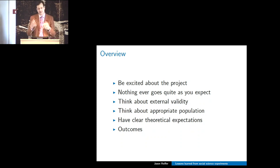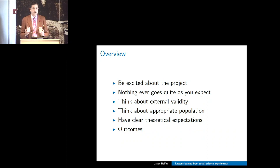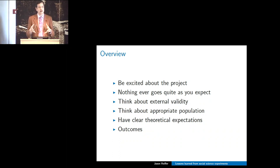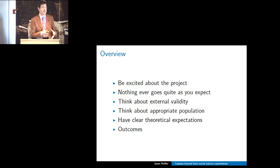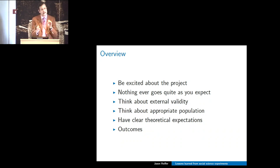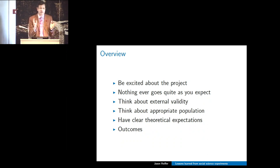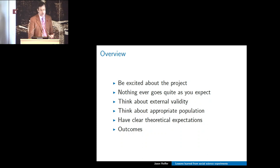You want to think about the appropriate population. When you're doing intervention work it's very obvious you're going to focus on the correct population, but when doing background social science research there are choices to make, usually budget-related. If you're trying to do things related to childhood vaccination, the population of interest is really parents, and doing surveys and getting samples of parents that you can do quality studies on turns out to be really expensive. There are lots of less expensive ways to get subject populations, and it's important to keep that trade-off in mind—do you do a $60,000 study or a $3,000 study where you have to hope that the inferences you draw go back to your target population?